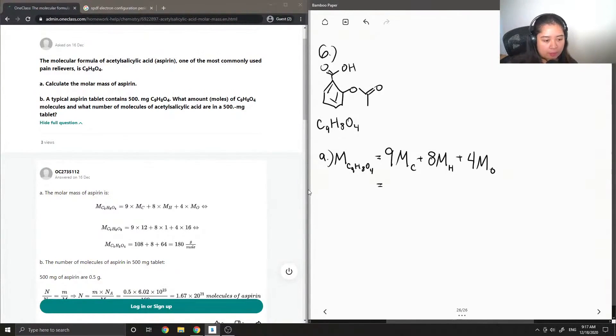So now if we look at our periodic table, you'll see that carbon has a molar mass of 12.01 grams per mole, and hydrogen has an atomic mass of 1.01 grams per mole. Lastly, oxygen has an atomic mass of 15.99 grams per mole.